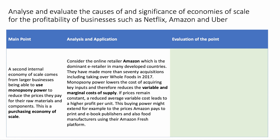Amazon has made over 70 acquisitions of different companies in recent times, including the big takeover of Whole Foods in 2017. Monopsony power reduces the cost of acquiring a key input — it means you have buying power — which cuts the variable marginal cost of supply and gives you a higher profit per unit. For example, this buying power might extend to what Amazon pays to print and book publishers, and also to food manufacturers who want to use the Amazon Fresh ordering and delivery platform. So as Amazon scales up its production, it can achieve purchasing economies.